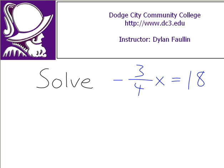Negative 3 over 4x equals 18. There is a trick to solving this equation which gets the job done in one step: multiply both sides of this equation by the reciprocal of the one fraction being multiplied to x. This trick only works in this very particular circumstance when on the left hand side all you have is just one fraction times x. If that's where you're at with your equation, you just have x by itself with one fraction being multiplied in front of it, then this little trick works.